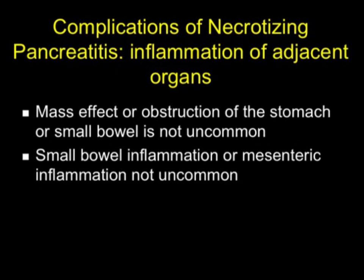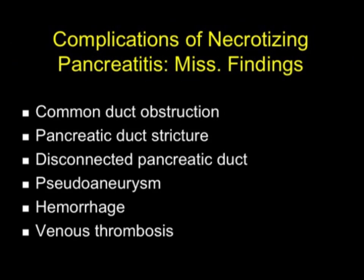Other complications of necrotizing pancreatitis include inflammation of adjacent organs. Mass effect or obstruction of the stomach or small bowel is not uncommon, and small bowel or mesenteric inflammation is also seen. More uncommon findings include common duct obstruction — perhaps from a pseudocyst or the causative stone — pancreatic duct stricture, disconnected pancreatic duct, pseudoaneurysm, hemorrhage, and venous thrombosis, which are really some of the key complications.